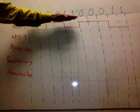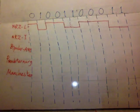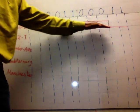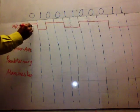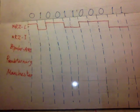Here, this is the high voltage level, and this is the low voltage level. We don't have zero voltage in NRZ-L.